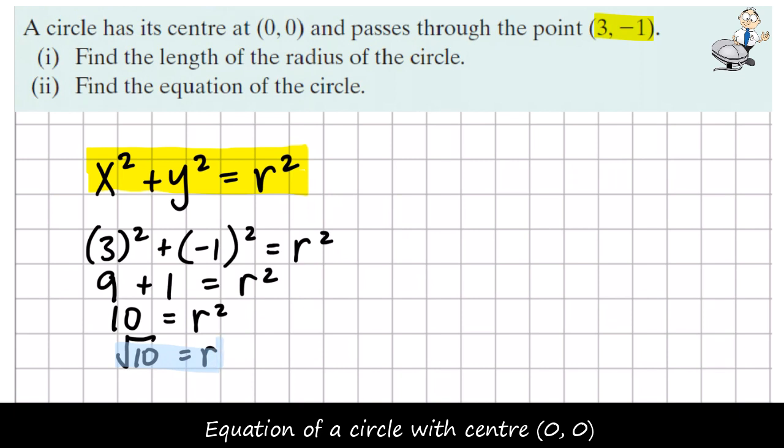So this is the radius of the circle. The equation of the circle - for this we just need to know what r squared is, and we know that r squared is 10, so it's x squared plus y squared equals 10. This is the equation of the circle that has center 0, 0 and radius root 10.